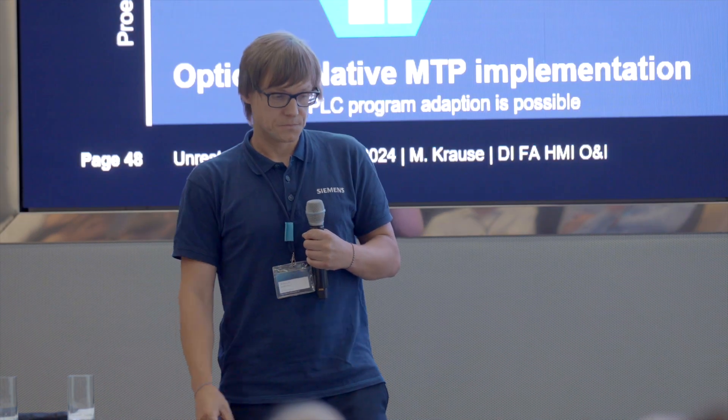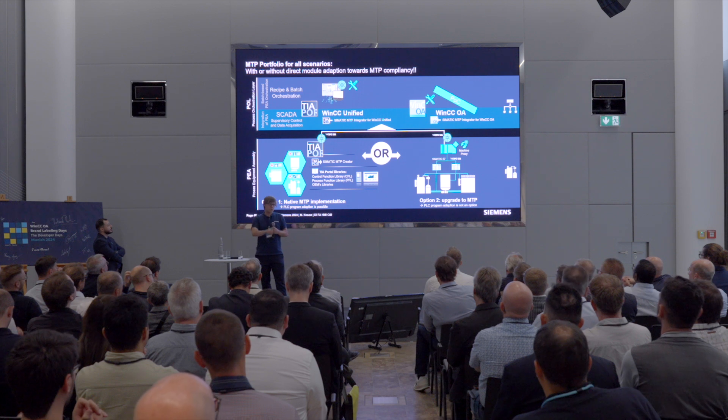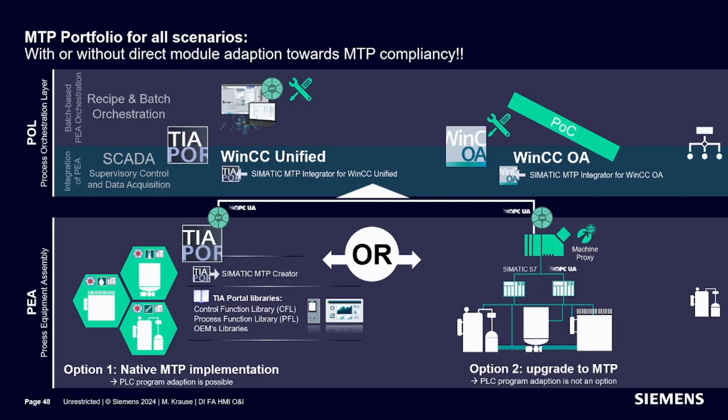Siemens offers a broad portfolio in this direction. We have enablements for OEMs with our TIA Portal and Simatic portfolio, but also for end customers with our DCS and SCADA systems. PA — Process Equipment Assembly — is an important term in the MTP standard, standing for a package unit, machine, or equipment. We have a native approach based on TIA Portal and the Simatic environment for greenfield projects, and if you have existing equipment you want to integrate with MTP, you can use our machine proxy app to enable non-MTP machines.